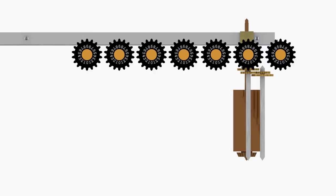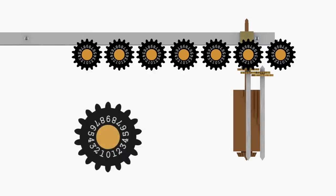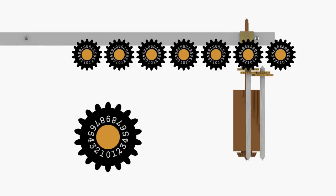Each counter dial has two sets of numbers. One set advances when the dial turns in the clockwise direction, and the other set advances when the dial turns in the counter-clockwise direction.